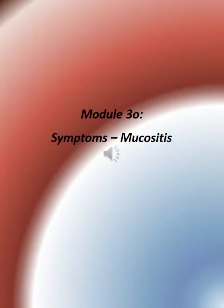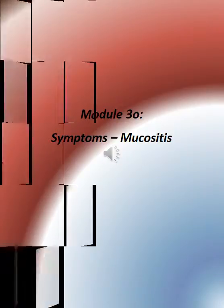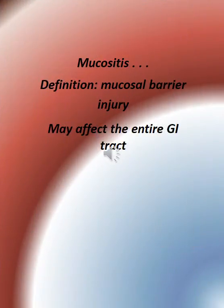Module 3.0: Symptoms — Mucositis. Definition: Mucositis is a mucosal barrier injury that may affect the entire GI tract.